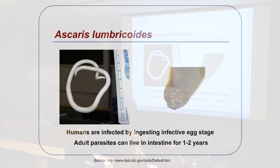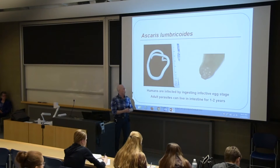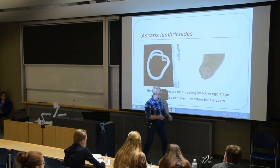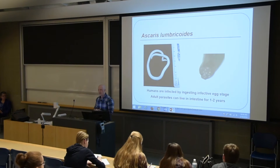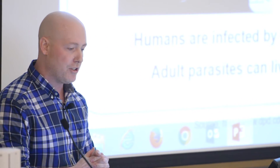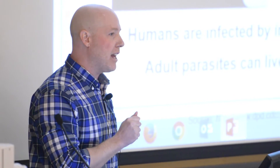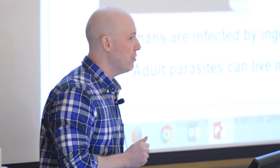Here's a parasitic nematode — a fairly large parasite called Ascaris lumbricoides. You can see from the ruler just how large this parasite is. This infects many people, particularly in developing countries. Humans are infected by ingesting the infective egg stage, and once inside your body, the adult parasites can live in the intestine for about one to two years.